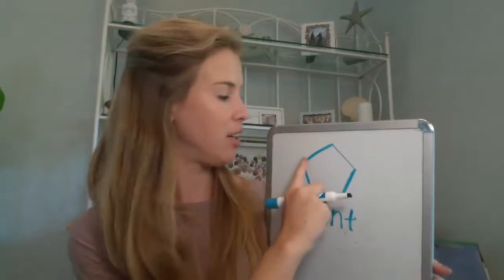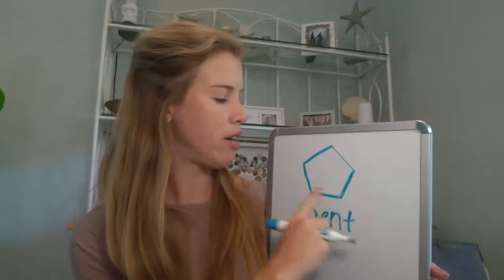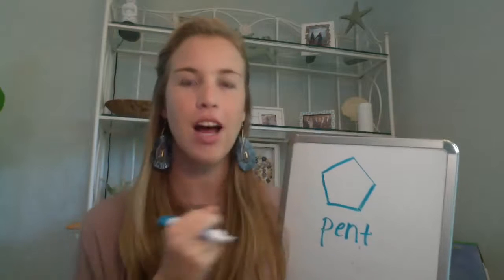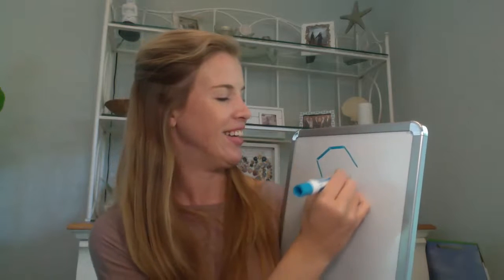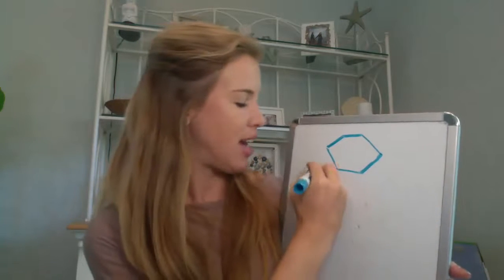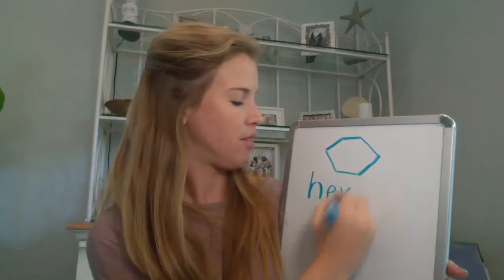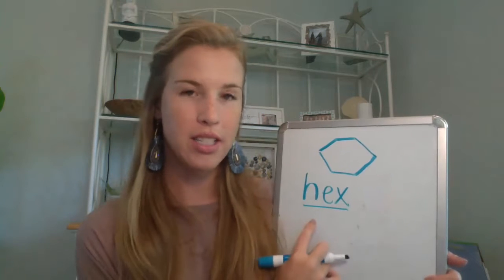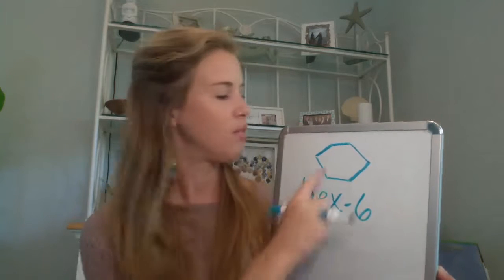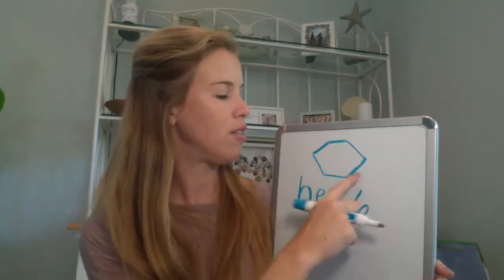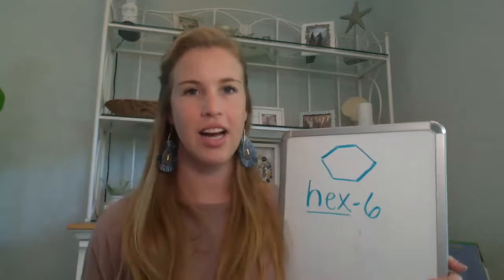Let's count the sides of the pentagon together: one, two, three, four, five. There are five sides in a pentagon. The next one is a hexagon. The prefix to the word hexagon is 'hex' and hex means six. Let's count: one, two, three, four, five, six sides in a hexagon.